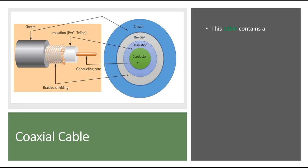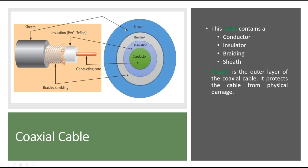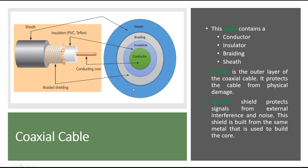The coaxial cable contains four layers: the conductor at the center, then the insulator, then the braiding, and finally the sheath, which is the outer layer. The sheath protects the cable from physical damage. The braiding is the second innermost part, which protects signals from external interference and noise. This shield is built from the same metal used to build the conductor.